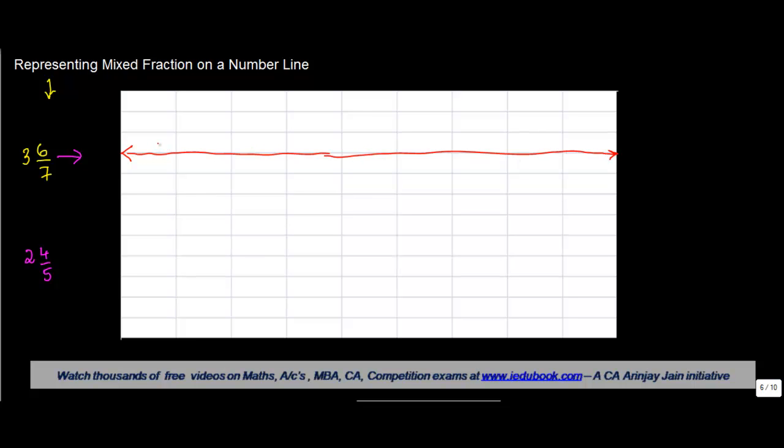A number line is something like this which will have all these numbers. Basically, when you have to represent particular numbers on a number line, what do you do?